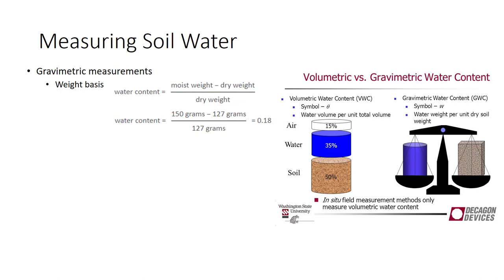Suppose one needs to measure water content of a soil at field capacity. A sample is taken two days after a heavy rain. If the sample weight were 150 grams when wet and 127 grams when dry, the moisture content would be 0.18, or 18% when converted to a percentage.